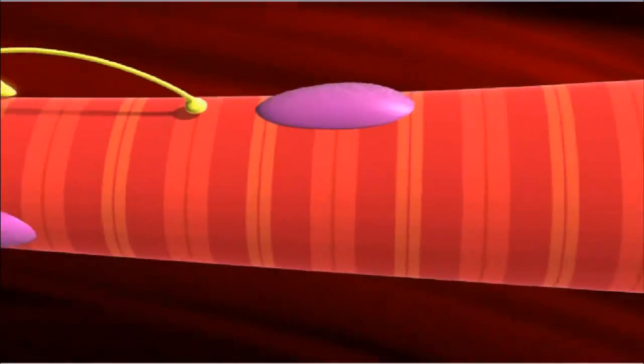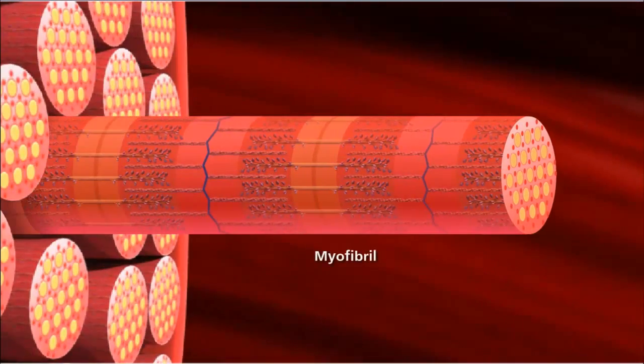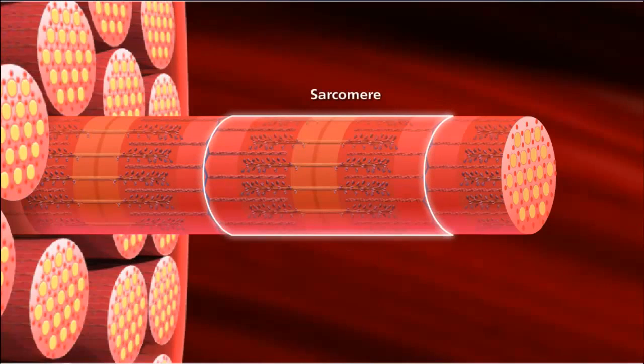Muscle fibers are composed of many myofibrils. A myofibril contains contractile units called sarcomeres. Sarcomeres run adjacent to one another down the length of the myofibril.